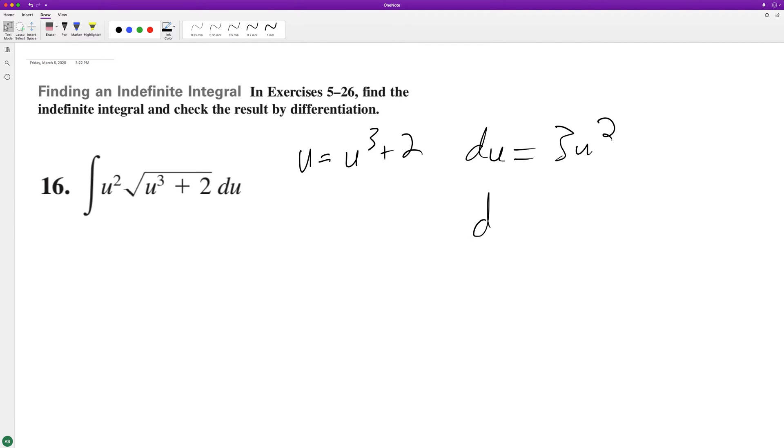So we need to multiply it by 1/3 to get that, and then you raise the 1/2. Du integration, we get 1/3 times 2/3, so 2 over 9.